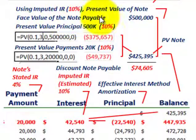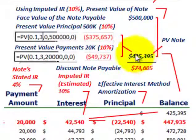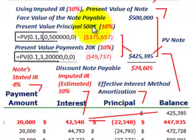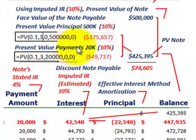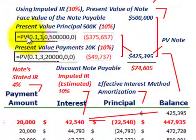We start with the face value of the note — looking at it as a note payable by Corporation A — its face value is $500,000, which they have to pay out three years after the issue date. We can determine the present value of the note and the discount. Using the imputed interest rate of 10%, we discount back the principal amount of $500,000 over 3 years at 10%. Using Excel, the present value of the principal is $375,657.